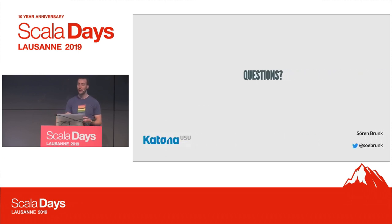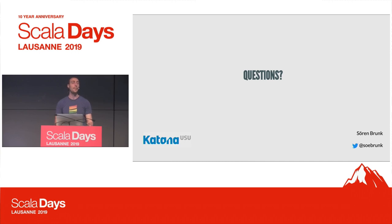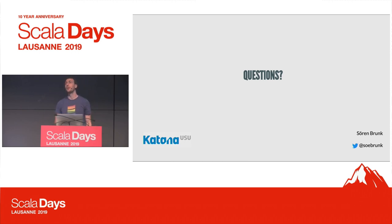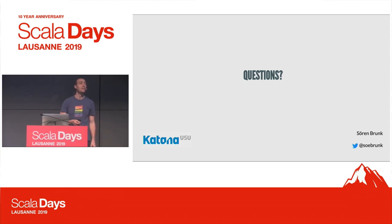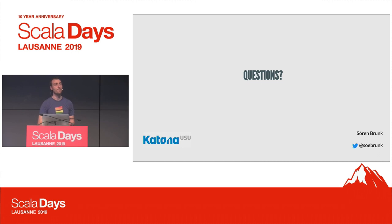Thank you very much. I think we've still got some time for a few questions. So, a question about using Almond in a teaching environment — the number one problem when organizing Scala workshops is always getting participants to set up the environment correctly. So Almond could be quite a good solution for that. Is there a solution for participants to have separate sessions — using one server where everyone can connect and have their own session?